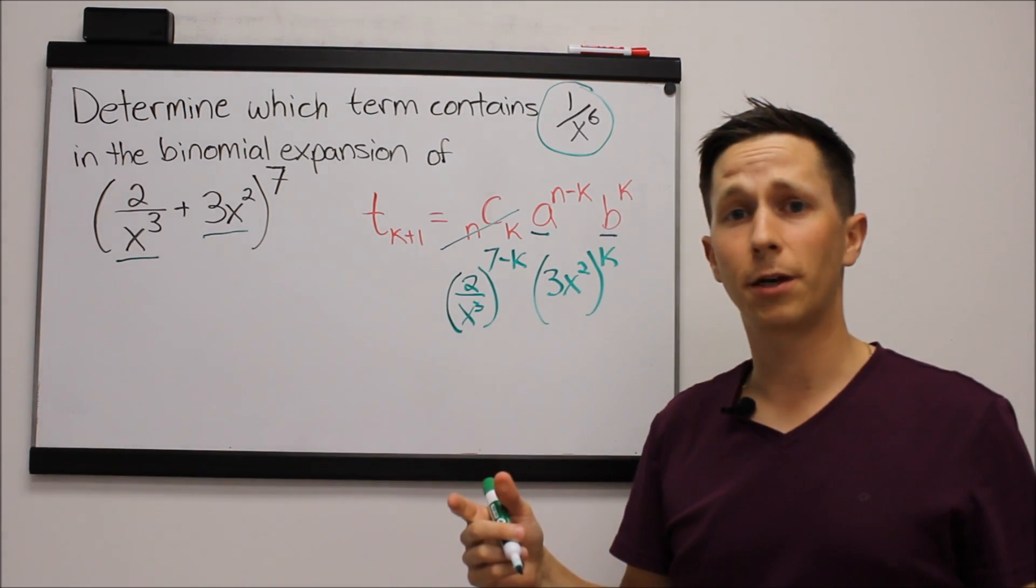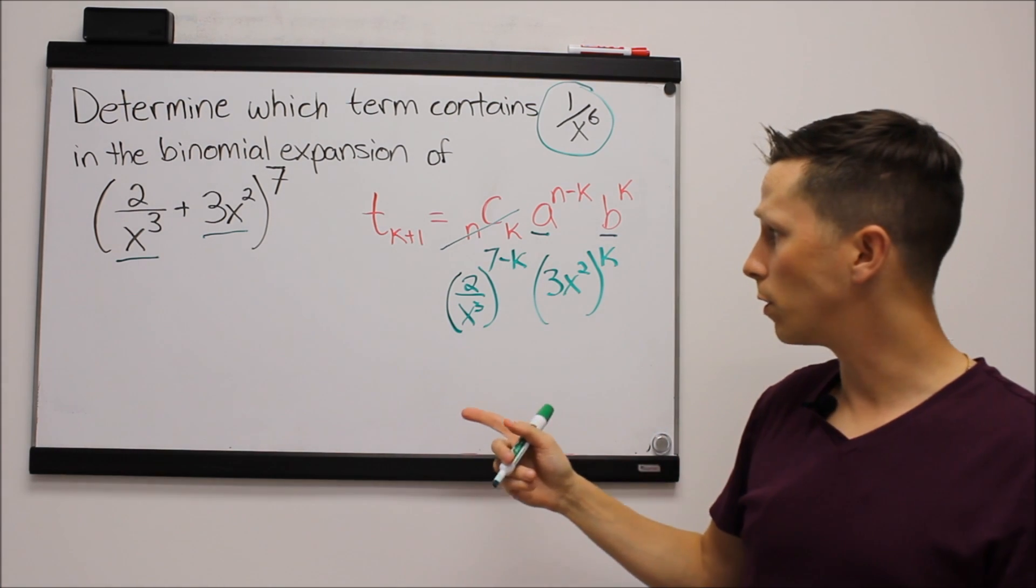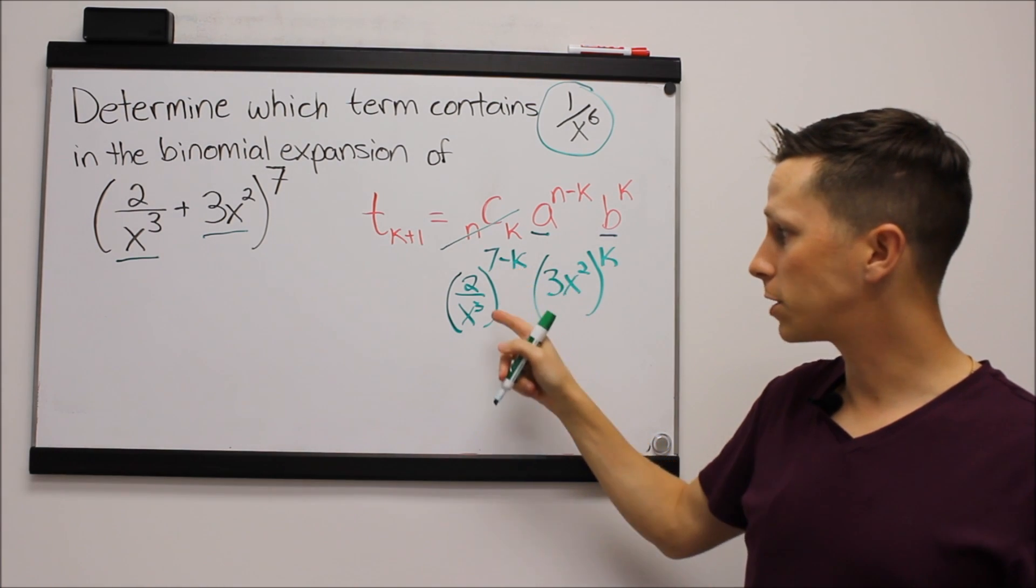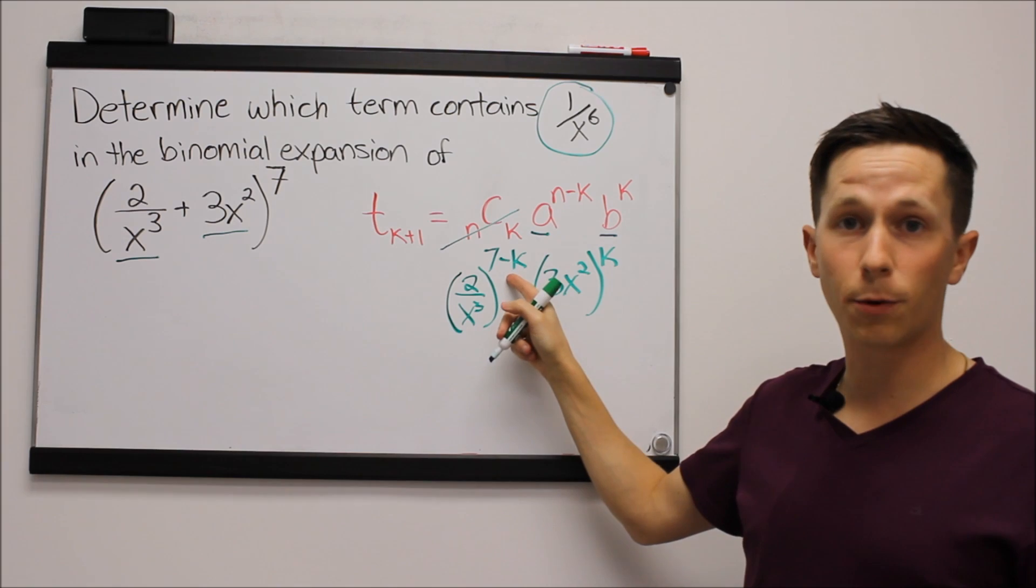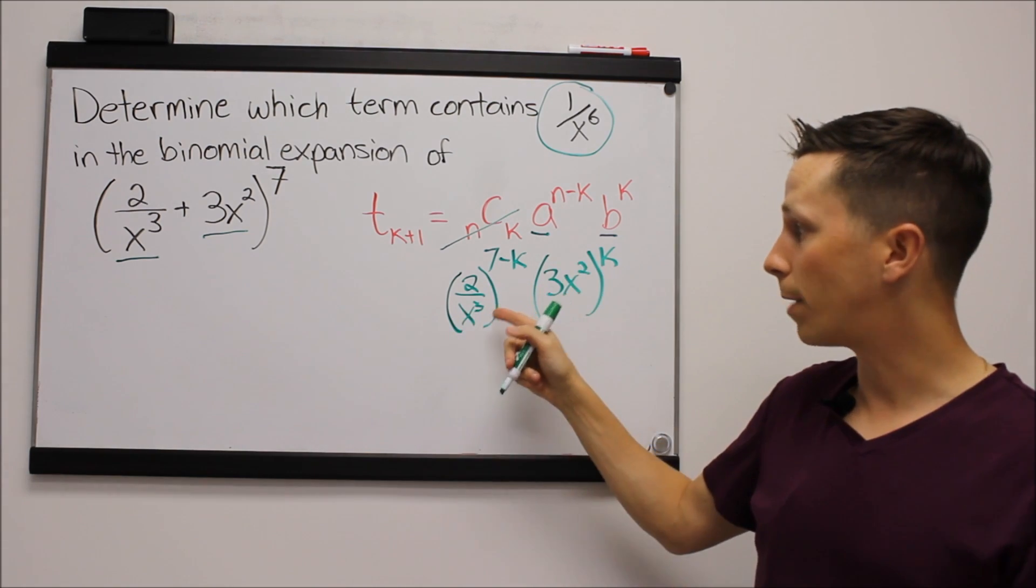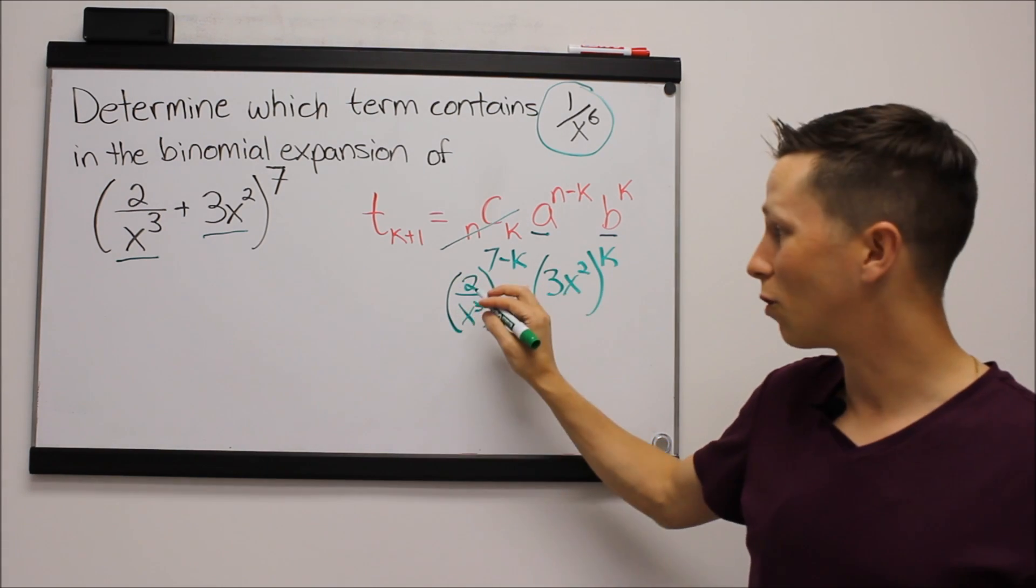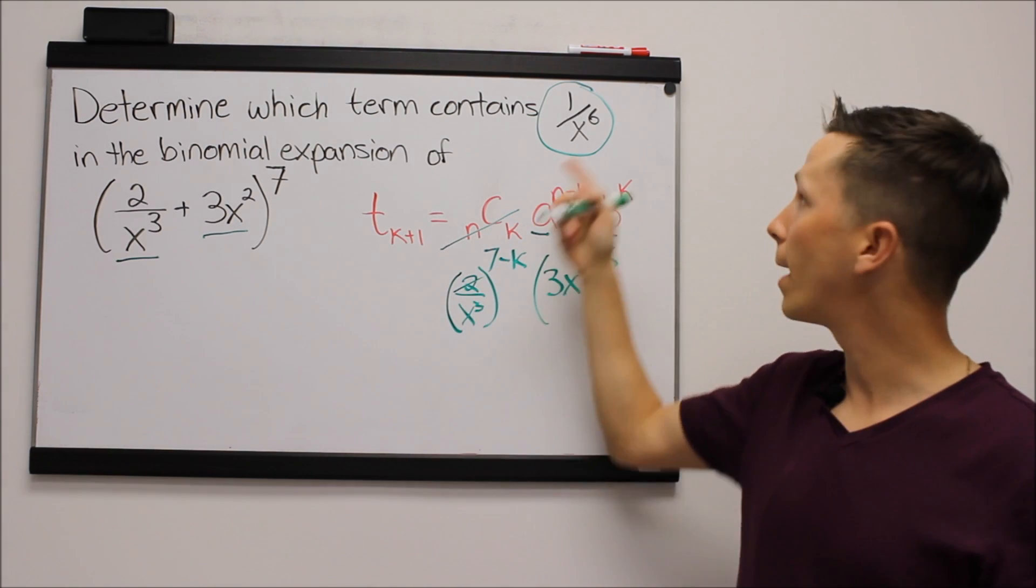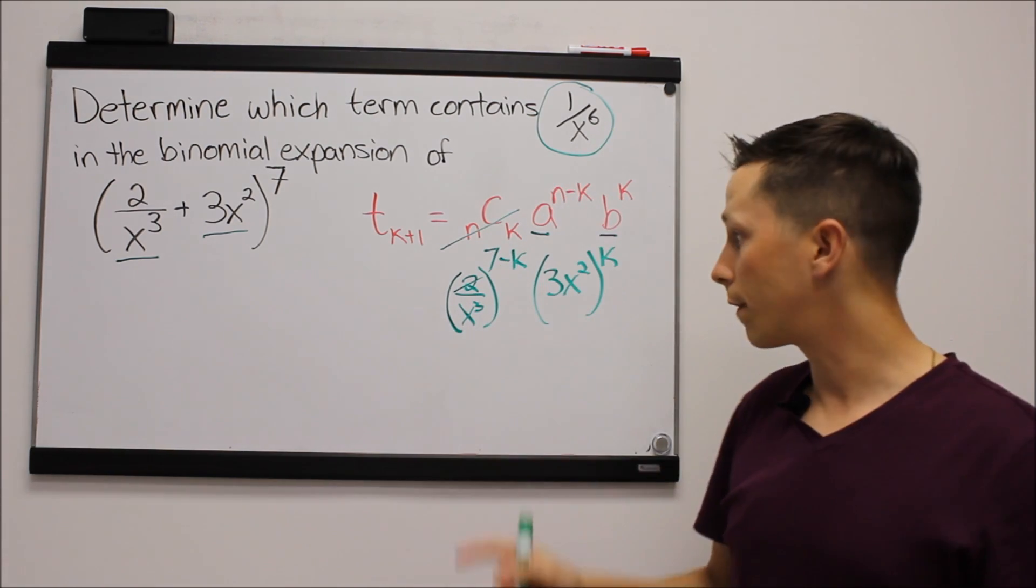So all we have to do now is actually apply our exponent rules. What happens when we have an exponent inside the bracket and an exponent outside? Well, they get multiplied. So I'm actually even going to ignore the 2 because this is going to have no impact on our exponent on the x.